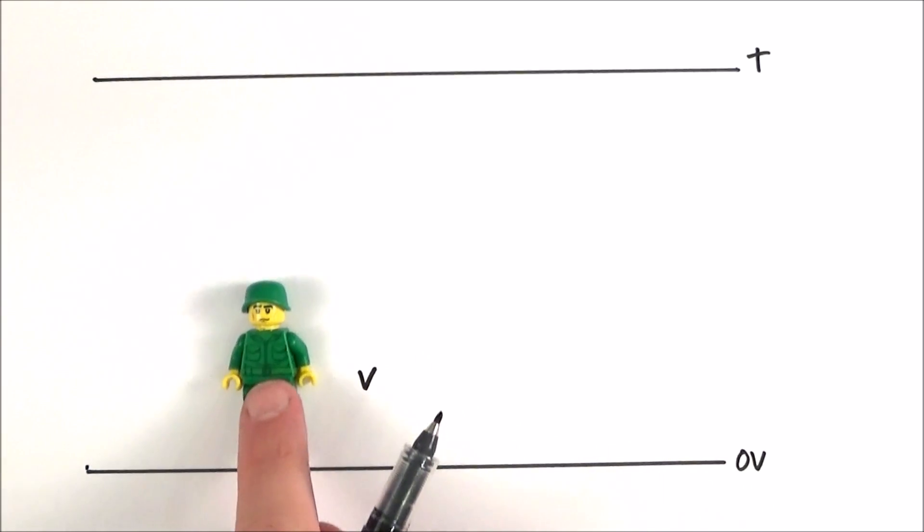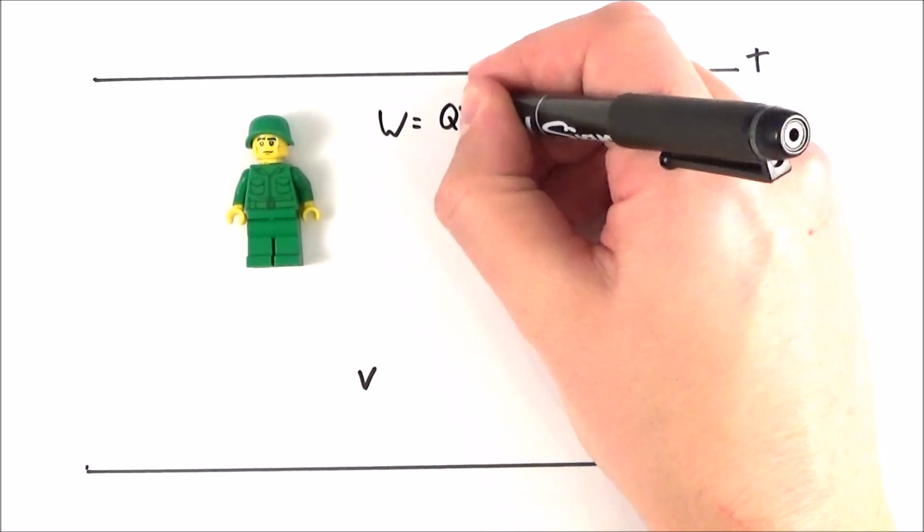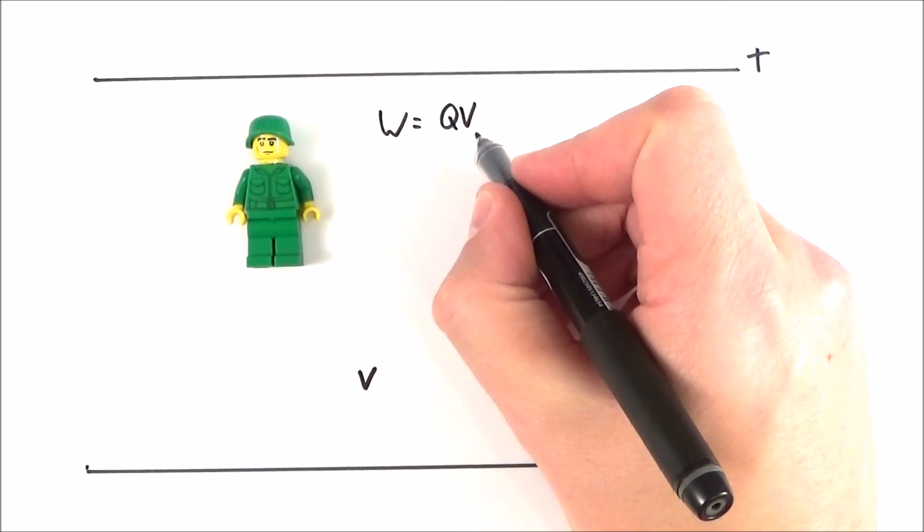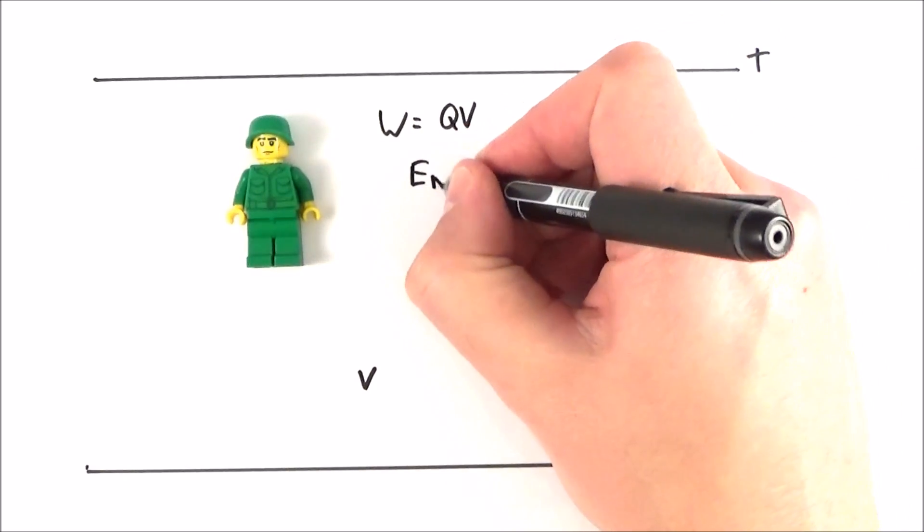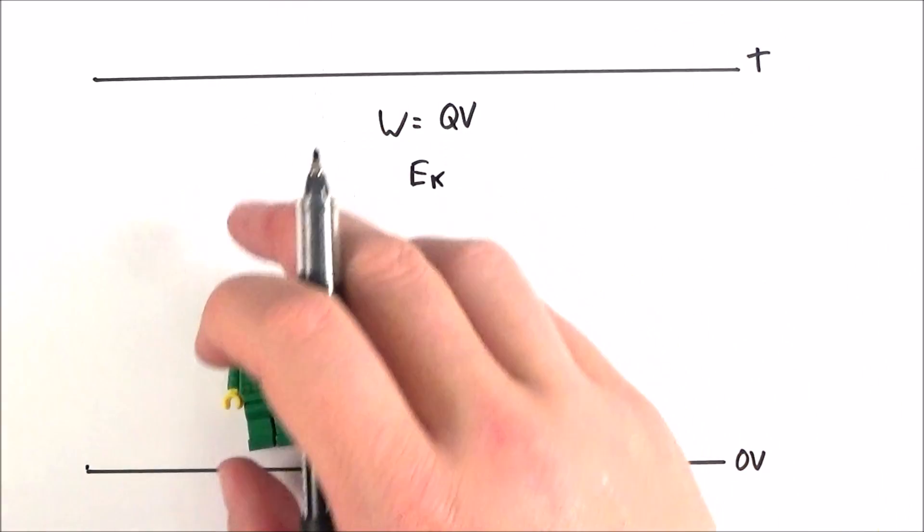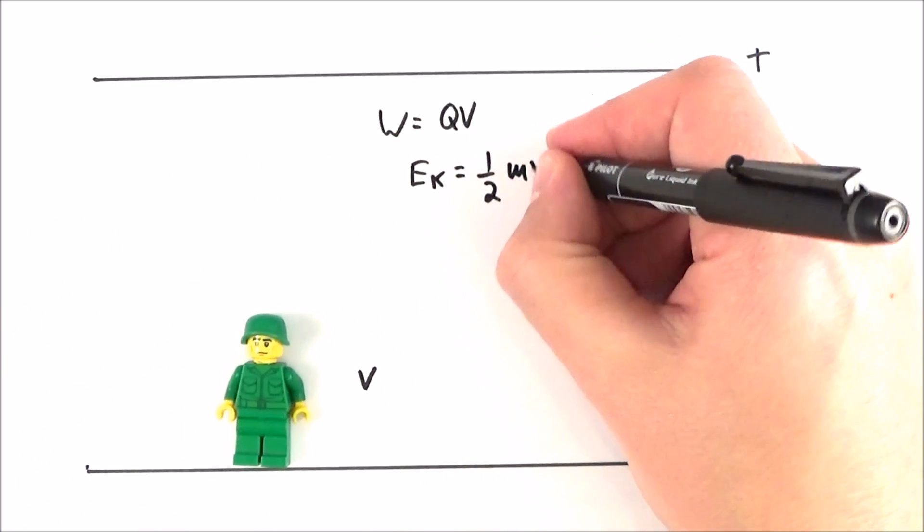Now the work done to get it through this is going to be equal to QV, so that's the charge multiplied by the potential difference. This is all going to turn into kinetic energy by the time it hits the bottom, and we can say that kinetic energy is going to be equal to a half mv squared.